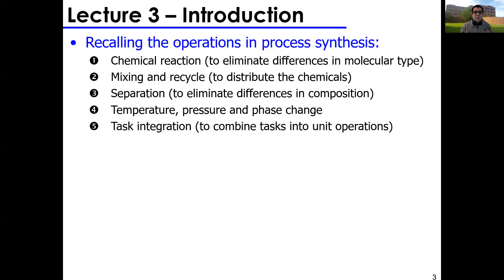If you recall from last week, we talked about the operations in process synthesis — the steps you take to design a base case. The first thing is putting in your chemical reactor, the heart of your process, where you do molecular conversion from raw material to final product. Then we add mixing and recycle to distribute chemicals and identify where to mix or separate species. The third point is adding separation steps, like a distillation column or absorption column.